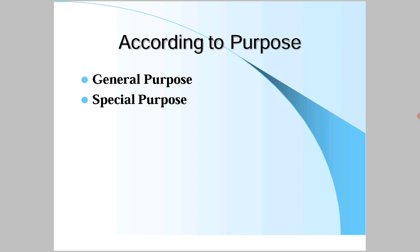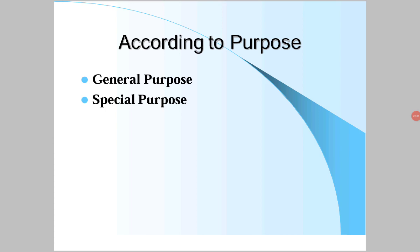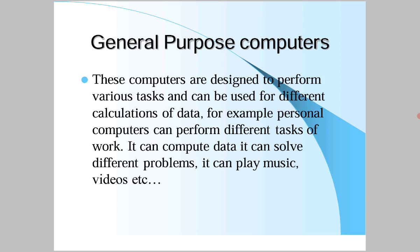Another category of computers is classified according to their purpose: general purpose computers and special purpose computers. General purpose computers are designed to perform various tasks and can be used for different calculations of data. Personal computers can perform different tasks - compute data, solve problems, and play music and videos. They are also called desktop computers.